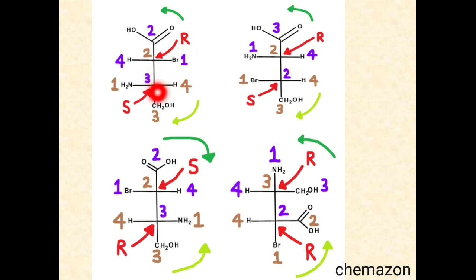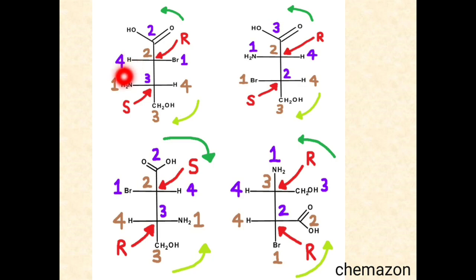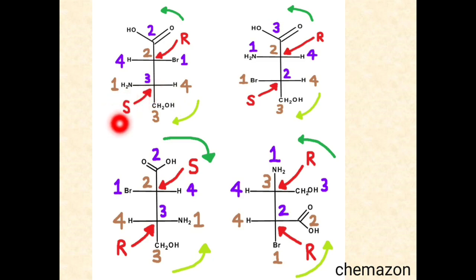At the third carbon, priority rules are assigned again. The first priority goes to the amino group since nitrogen has a higher atomic number. Comparing the second and third carbons, this carbon is attached to a bromine group which is higher in atomic number. From 1 to 2 to 3 it is clockwise, and the fourth priority group is on the horizontal bond or wedge, hence the configuration at the third carbon is S.